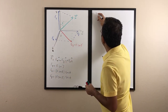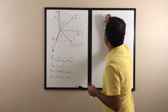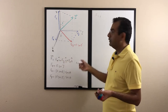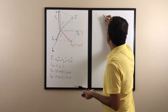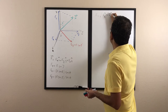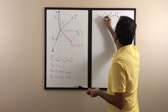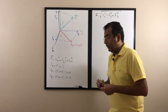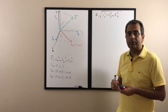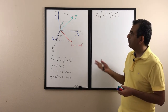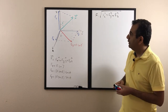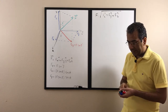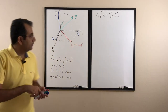The magnitude of F is found by squaring all the components and taking the square root: magnitude equals the square root of (Fx² + Fy² + Fz²). When it comes to the angles, finding the angle between F and each of the three axes is not as straightforward as in 2D.